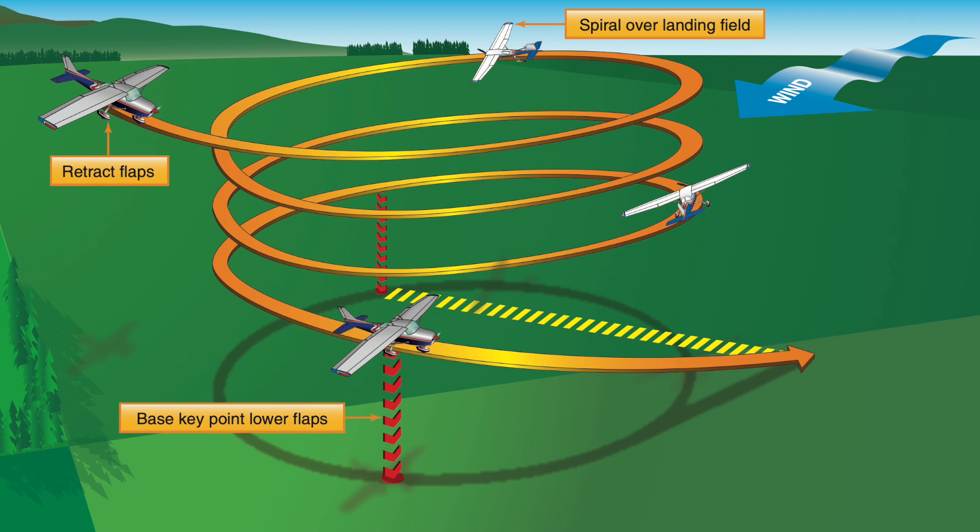This was much more common to practice when flying gas engines, because the motor could quit at any time — you had to practice being dead stick with no engine running. Could you establish a landing point from wherever you are? It's still a good thing to do with electric models: just pick a point, pull the throttle to idle, and see if you can make it back to the field.